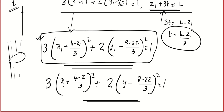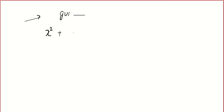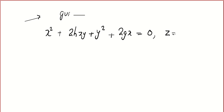An equation means the relation satisfied by each and every point in the system. Generalizing (replacing x1, y1, z1 with x, y, z), the required equation is: 3(x + (4 − z)/3)² + 2(y − (8 − 2z)/3)² = 1. Now you can try one more problem: find the equation of a cylinder whose guiding curve is x² + 2hxy + y² + 2gx = 0, z = 0, and the axis is given by x/l = y/m = z/n.